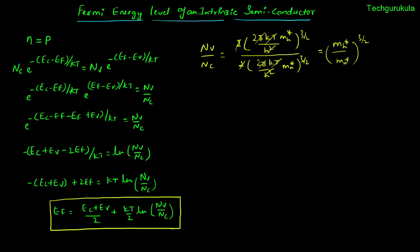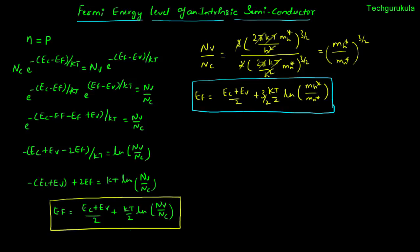We are left with (Mh star over Mn star) to the power 3/2. Substituting this Nv over Nc into the expression, we can write Ef as (Ec plus Ev) over 2 plus (kT over 2) times ln of (Mh star over Mn star) to the power 3/2. We can take the 3/2 out of the ln, and represent this in two final forms.